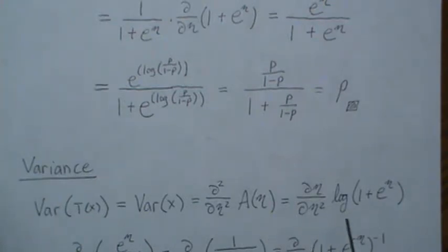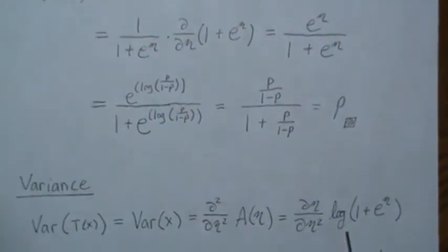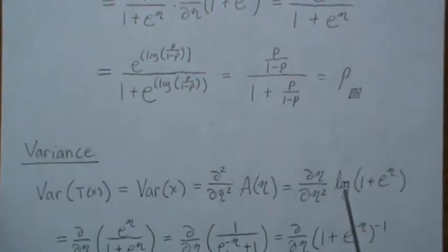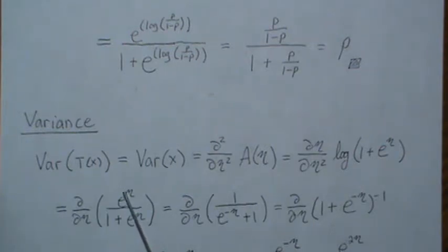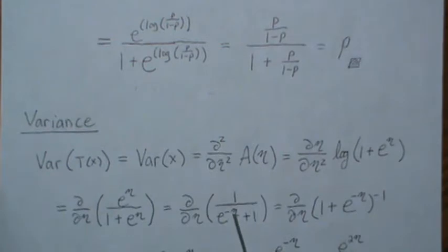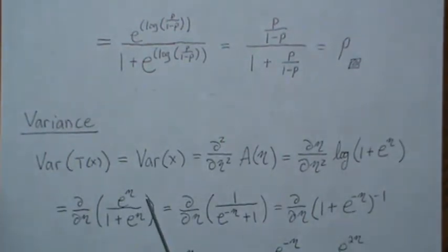Which is this. Now we already found the first derivative, which was this, so we can kind of cheat and just put that there and then take the derivative of it again. Then I like to just have one eta involved, so if we multiply by minus or e to the minus eta divided by e to the minus eta, then we get this piece here.